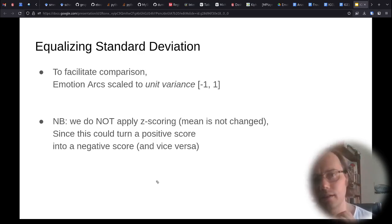Note that we do not apply z-scoring, which is applied by some other work on emotion arcs. The reason for that is that z-scoring also includes normalizing the mean, so that the mean of the emotion arc is set to zero. However, the reason to avoid this is that this could turn a positive score into a negative score and vice versa. So, by only scaling the variance, we retain all the positive scores in the original also show up as positive scores in the resulting emotion arc.